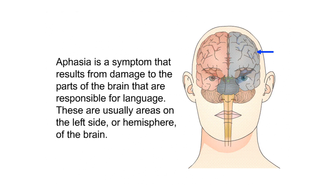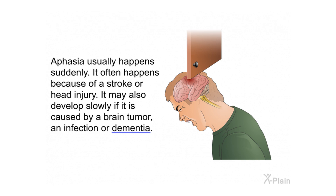Aphasia is a symptom that results from damage to the parts of the brain that are responsible for language. These are usually areas on the left side, or hemisphere, of the brain. Aphasia usually happens suddenly. It often happens because of a stroke or head injury. It may also develop slowly if it is caused by a brain tumor, an infection, or dementia.